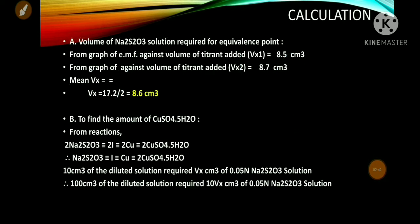Proceeding to the calculation part: first, determine the volume of sodium thiosulphate solution required for the equivalence point. From the graph of EMF against volume of titrant added, the first equivalence point Vx1 is 8.5 cm³. From the graph of volume of titrant added against delta E / delta V, the second equivalence point Vx2 is 8.7 cm³. Therefore, the mean volume equals (Vx1 + Vx2) / 2 = 8.6 cm³.